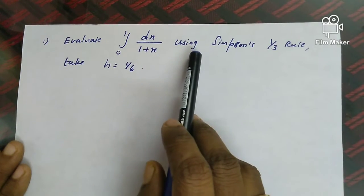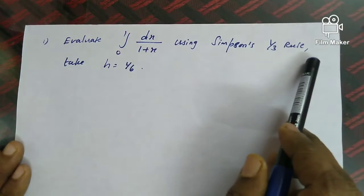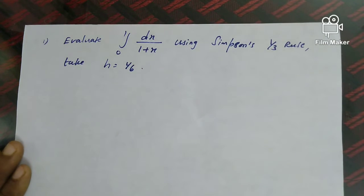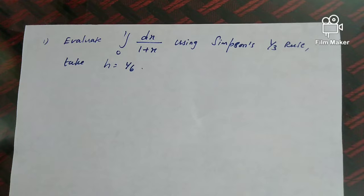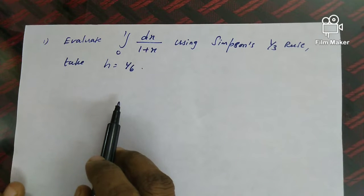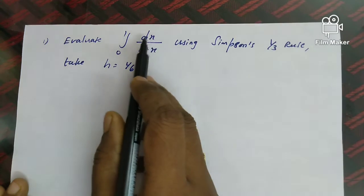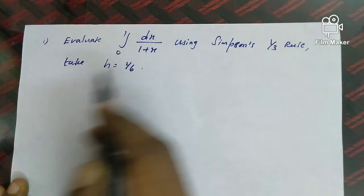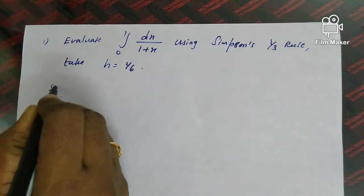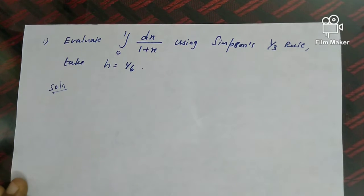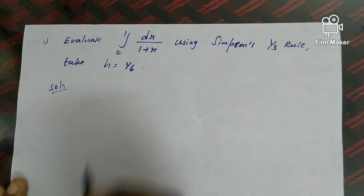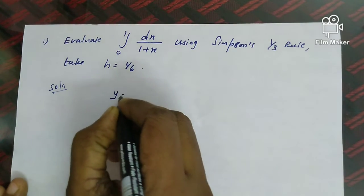Problem 1: Evaluate the integral from 0 to 1 of dx/(1+x) using Simpson's 1/3 rule, taking h equal to 1/6. The given range is divided into an even number of sub-intervals with h = 1/6.